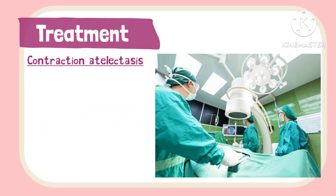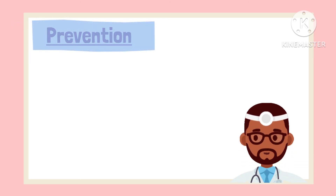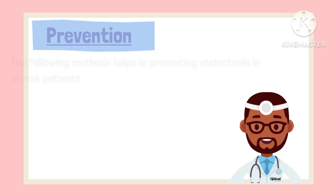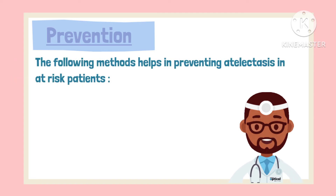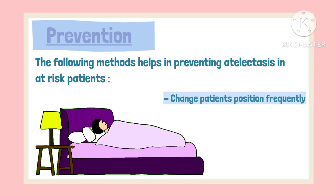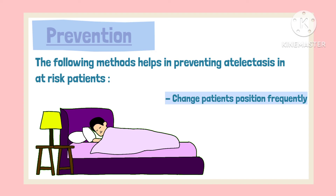Contraction atelectasis may require surgery to remove or shrink the tumour. A lot of care is taken to prevent this condition in patients at risk. Prevention methods include frequently changing the patient's position, with a sitting position preferred over supine or lying down.